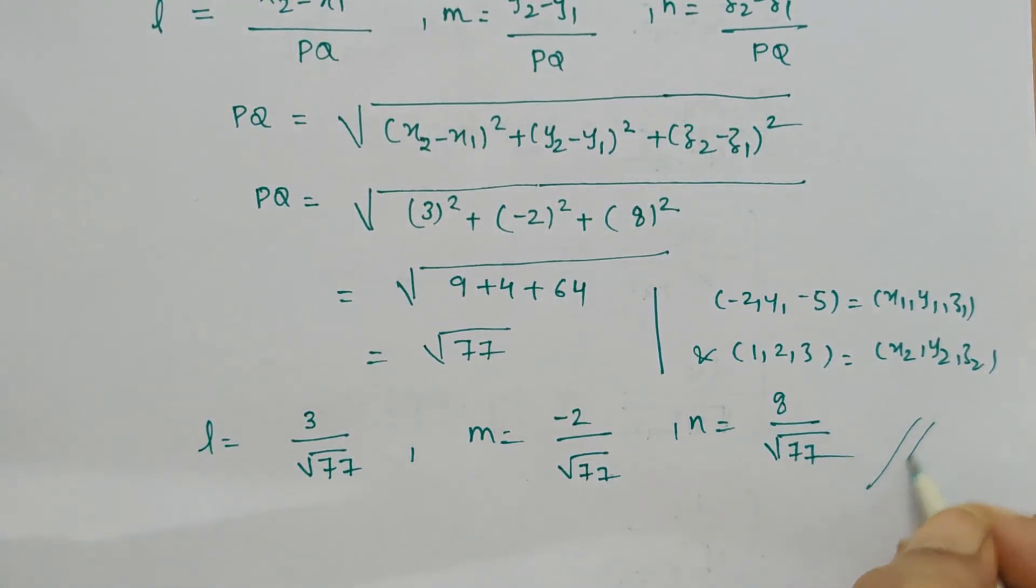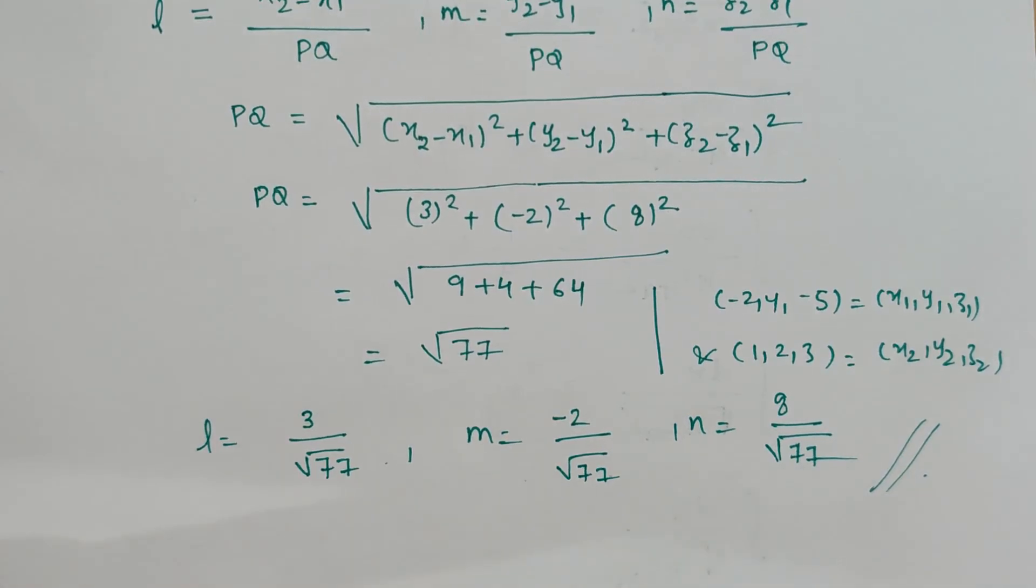So the direction cosines are this for the line segment passing through the points minus 2, 4, minus 5 and 1, 2, 3. Thank you.